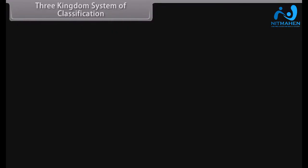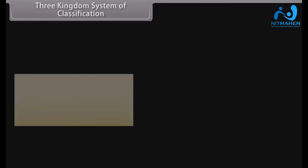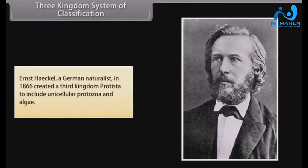Three Kingdom System of Classification. Ernst Haeckel, a German naturalist, in 1866 created a third kingdom, Protista, to include unicellular protozoa and algae.